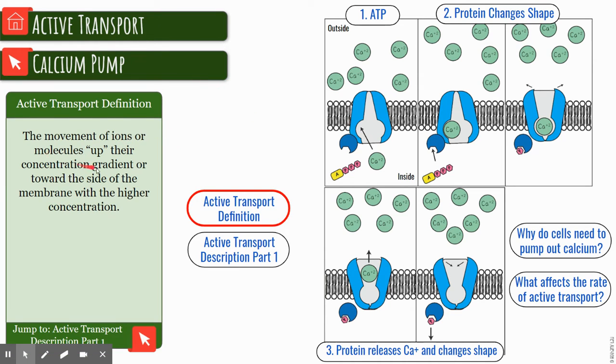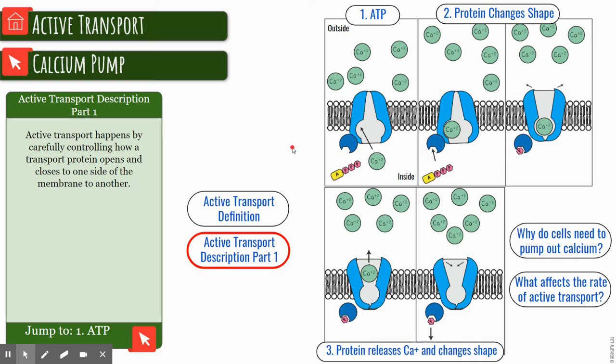Active transport is the movement of ions or molecules up their concentration gradient or toward the side of the membrane with a higher concentration. So they go against the gradient. You have this low concentration of calcium here and it's going to move toward the higher concentration up here. Normally it is the opposite.